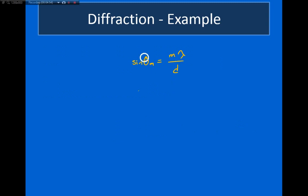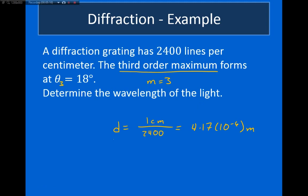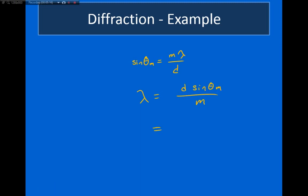Plugging this into this formula and now solving for λ, so λ is equal to d sin θ divided by m. Plugging my values that I have into this, so d is equal to this 4.17 times 10 to the minus 6, m is equal to 3, and θ is equal to 18 degrees. We see that this is equal to 429 nanometers.